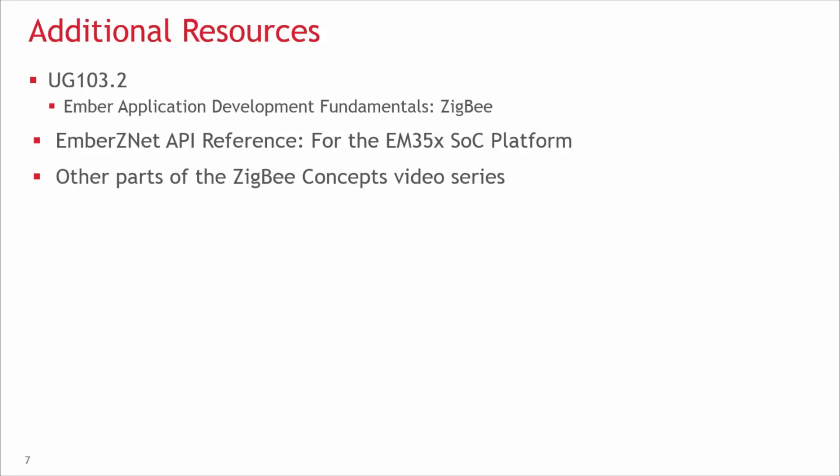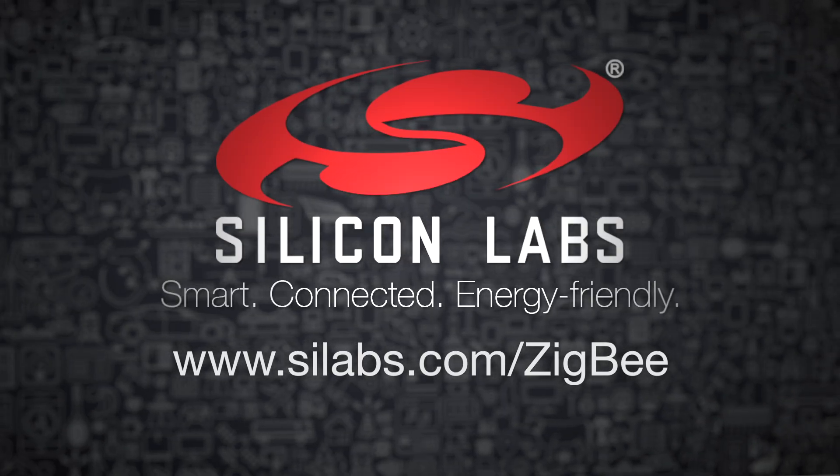So now we've learned about node types: the coordinator, the router, and the end device of different varieties. We've also learned about PAN IDs and extended PAN IDs, and about addresses such as the long EUI-64 address, the short 16-bit network address or node ID, and logical addresses within the node such as the endpoint and cluster ID. For more information on these concepts, please refer to UG 103.2, Ember Application Development Fundamentals: Zigbee. Please also see other parts of the Zigbee Concepts video series for a comprehensive overview. Thank you for watching.